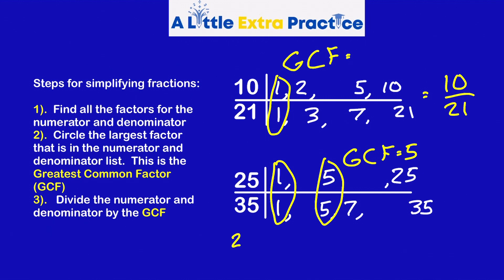So I'll rewrite this: 25 out of 35. Step number three is divide the numerator and denominator by the GCF. 25 divided by five is five, 35 divided by five is seven. Five-sevenths. 25 out of 35 simplifies to five-sevenths.